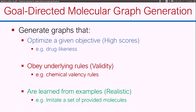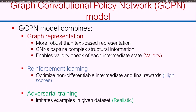We want a model that can generate graphs fulfilling three objectives: optimize for a particular objective such as drug-likeness or potency; obey underlying rules like chemical laws; and also be realistic. We developed this model called the Graph Convolutional Policy Network (GCPN) that combines three ingredients: a graph representation to directly generate graphs; reinforcement learning to directly optimize for the property of interest; and adversarial training to ensure that generated molecules are realistic by providing the model with a set of example realistic molecules.